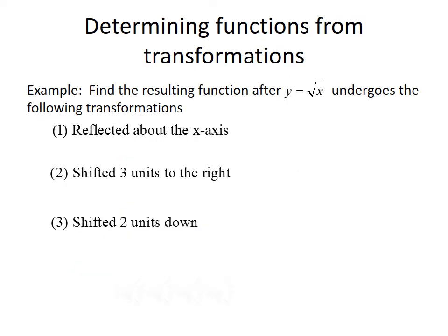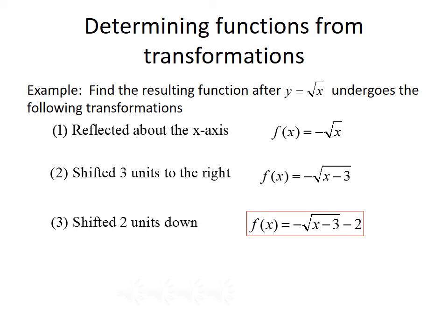The last thing we want to do is determine the resulting function after applying a list of transformations to y = √x. It's reflected about the x-axis, shifted three units to the right, and shifted two units down. Reflecting about the x-axis puts a minus sign outside: -√x. Shifting three units to the right means subtracting 3 inside the square root: -√(x - 3). Shifting two units down means subtracting 2 outside the square root. So the overall function is f(x) = -√(x - 3) - 2.